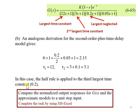And finally, it is for your own assignment. Compare the normalized output response for G(s), and compare with the approximated models, the first order and also the second order, to a unit step input. You can complete the task simply by using Microsoft Excel.